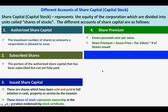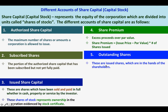Next is outstanding shares. These are issued shares which are in the hands of the shareholders. Basically, outstanding shares are issued shares. However, if there are treasury shares, we deduct treasury shares from the issued shares, and that will be your outstanding shares.